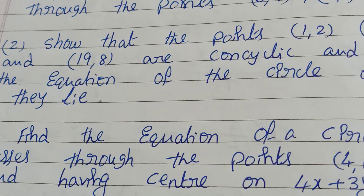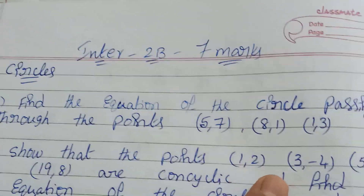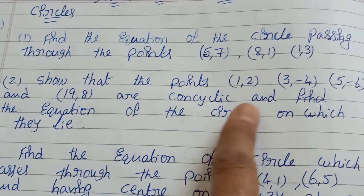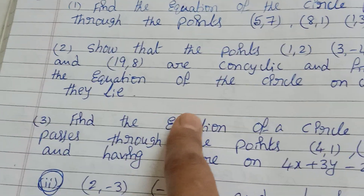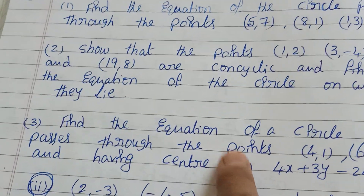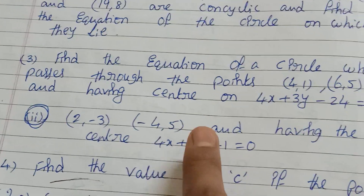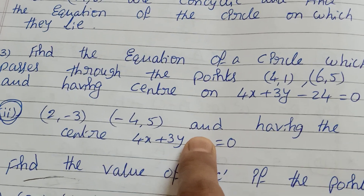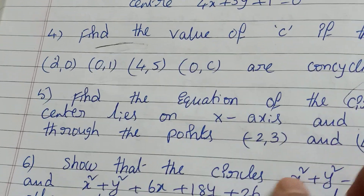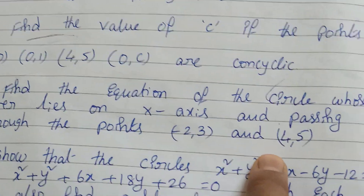This is a video of AP and Telangana. Find the equation of the circle passing through the points. Find out the points under the equation. The circle passes through the points — this is the third problem, AP. This is the second bit. Next: find the value of C. The circle lies on the x-axis and passes through the points.